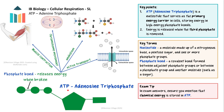ATP stands for adenosine triphosphate and it plays a central role in cell biology. ATP is a nucleotide made of adenine, a ribosugar and three phosphate groups. It serves as the primary energy carrier in cells — in other words, it acts as the energy currency of the cell.